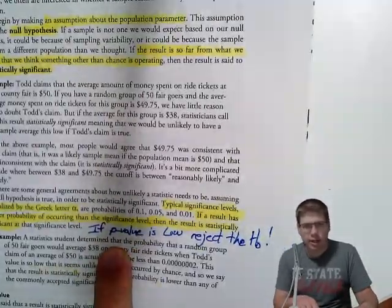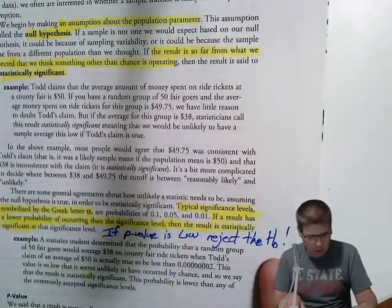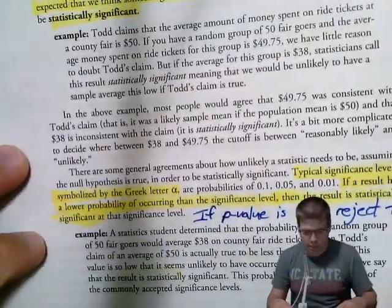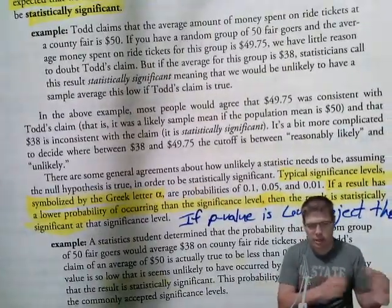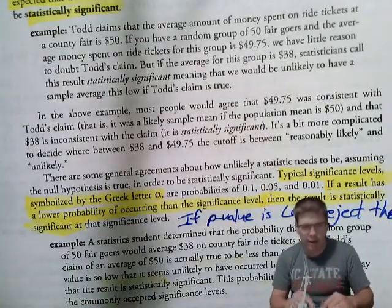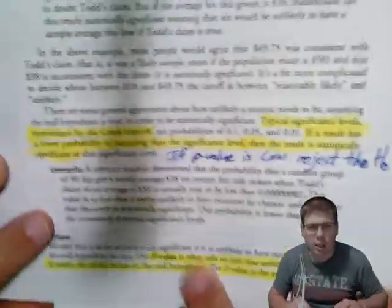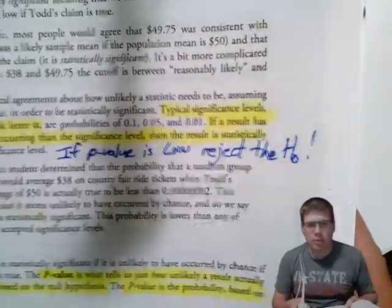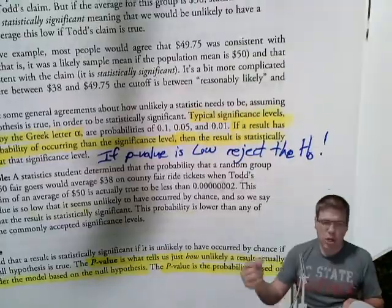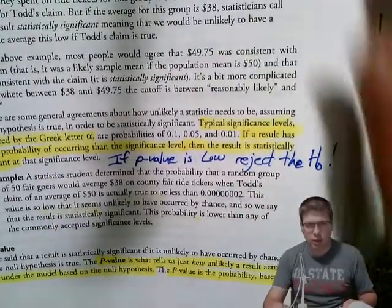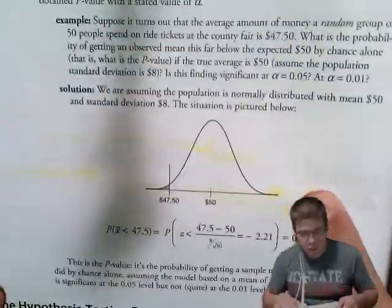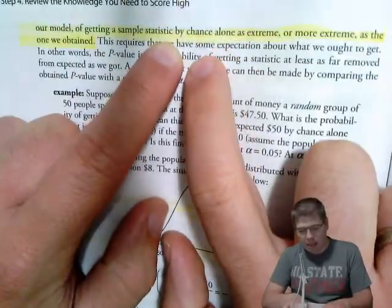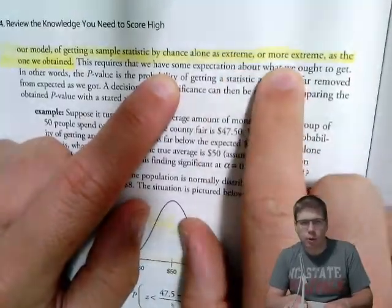To say something statistically significant, we compare it generally to these significance levels that we might be given in a problem, typical ones like alpha equals 0.1, 0.05, 0.01. If that result is that improbable, smaller than that, then we reject that null hypothesis, say it's statistically significant and accept the alternative hypothesis. If the p-value is low, reject the null hypothesis. That p-value is what our formula calculates for us. It gives us that standardized test statistic, we calculate that probability, that value is the p-value, and that is just how unlikely that result is.